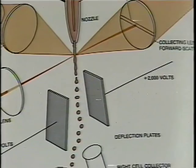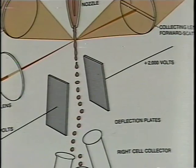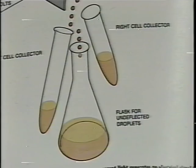After desired cells pass through the laser beam, they are electrically charged — positive or negative — and continue to fall by gravity until they reach electrical deflecting plates. The cells are then deflected to the left or right based on their charge and fall into collecting tubes. Droplets lacking cells, or containing unwanted ones, continue to fall straight into a collecting vessel.